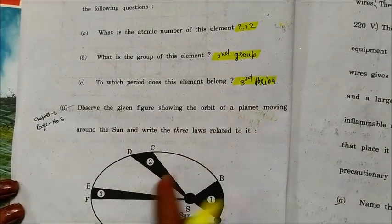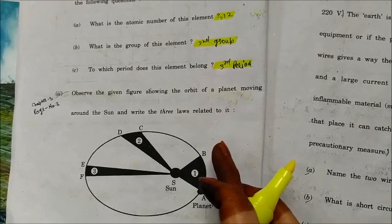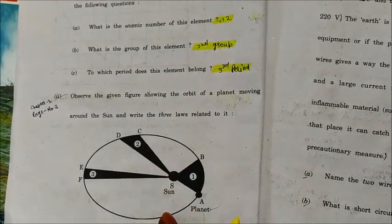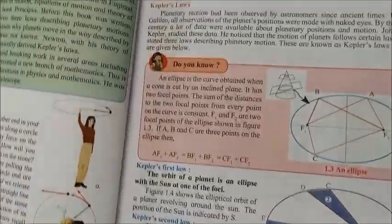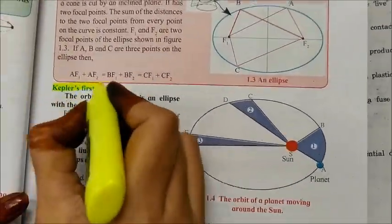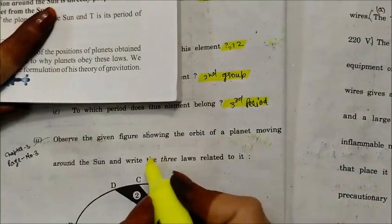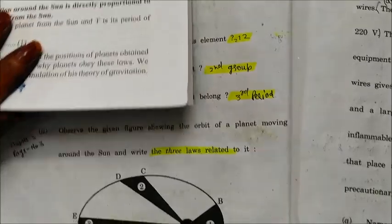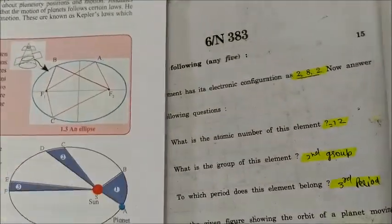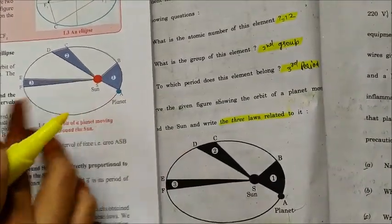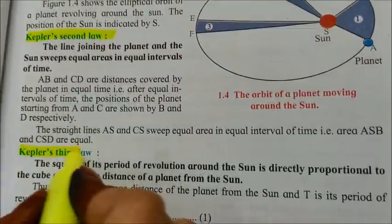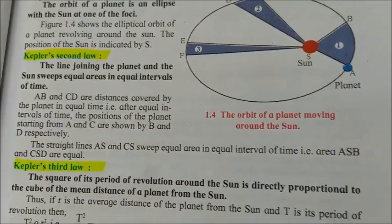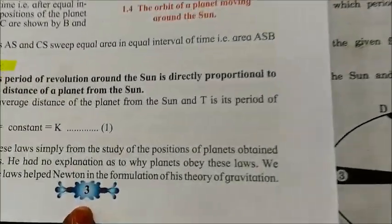Observe the given figure showing the orbit of a planet moving around the Sun and write the three laws. This is Kepler's law, taken from chapter 3, page number 3. You have to write Kepler's first law, Kepler's second law, and Kepler's third law.